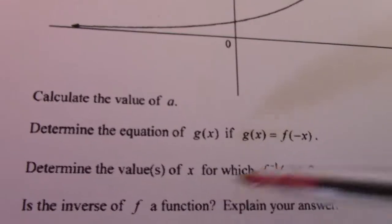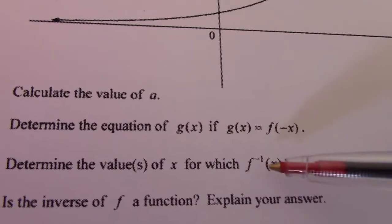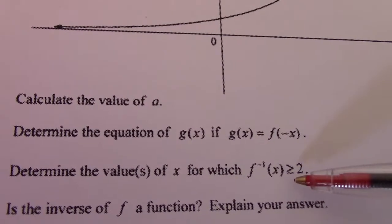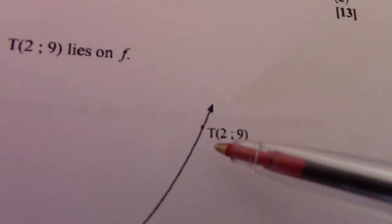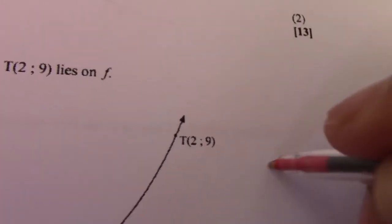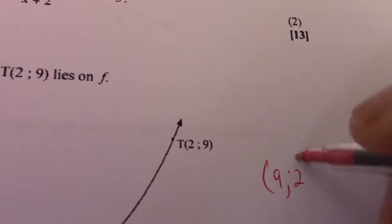5.3: Determine the values of x for which the inverse function is greater or equal to 2. So we find inverse function, take note, (2, 9), then the inverse function's coordinates would become (9, 2).